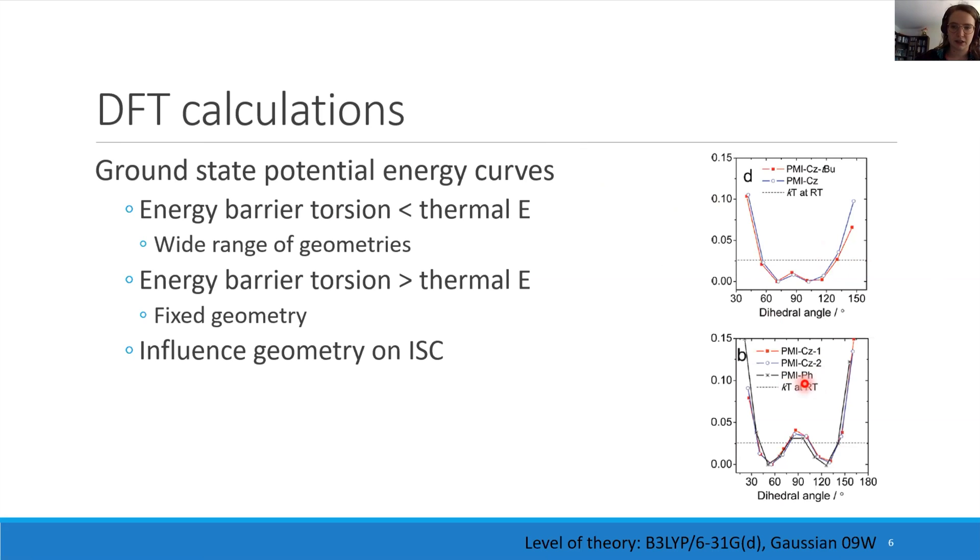If you look at the CC-linked dyads, this torsion is higher in energy and results in a more fixed geometry. The wide range of geometries reduces the intersystem crossing.